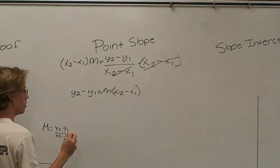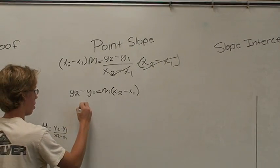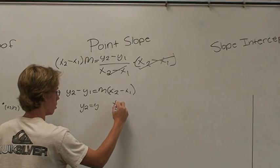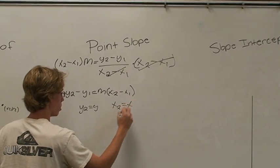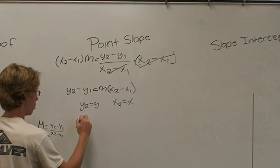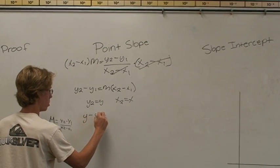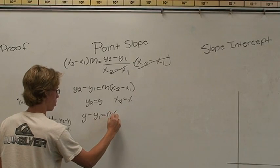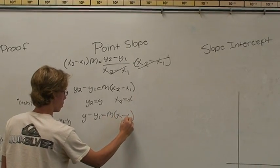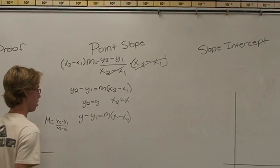Let's go ahead and rewrite it: y2 minus y1 equals m times the quantity of x2 minus x1. At this step, we want to let the y2 and x2 values be any general y and any general x. Y2 equals y and x2 equals x. We then make these substitutions into our equation. Y minus y1 equals m times the quantity of x minus x1, which is our point slope equation.